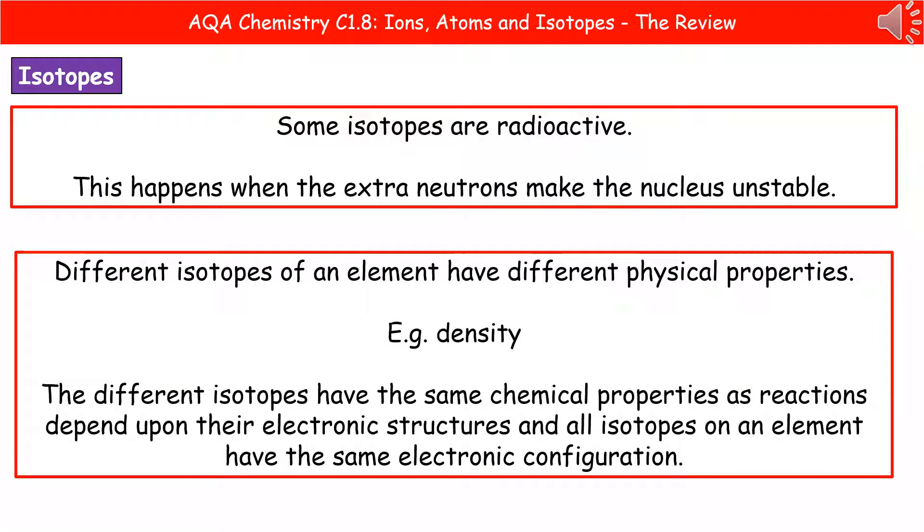One of the key things about isotopes that's going to be important when we look at it a bit more in our chemistry and our physics courses is that some of these isotopes are actually radioactive. And the reason that they're radioactive is because that extra neutron that they're gaining is making the nucleus unstable. And unstable nuclei break down through a process of radioactive decay, which you'll learn about more in your physics course.